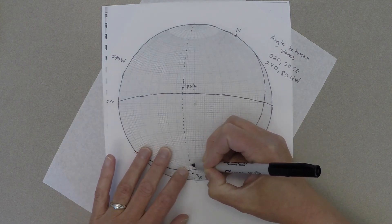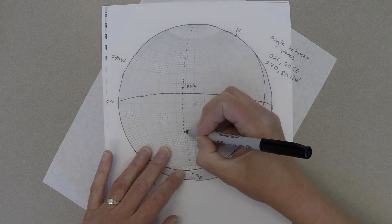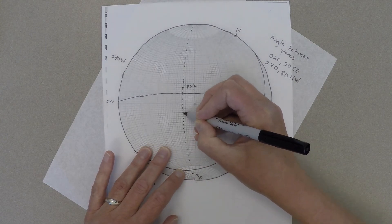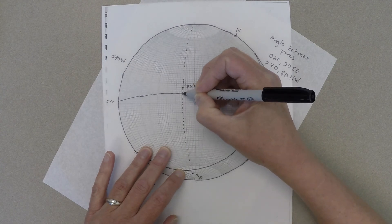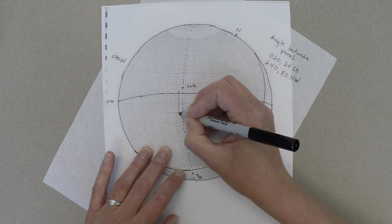Then we're going to count the angle between those. It looks like 8, 18, 28, 38, 48, 58, 68, 78, 88, 90, 92, 94, 96 degrees.